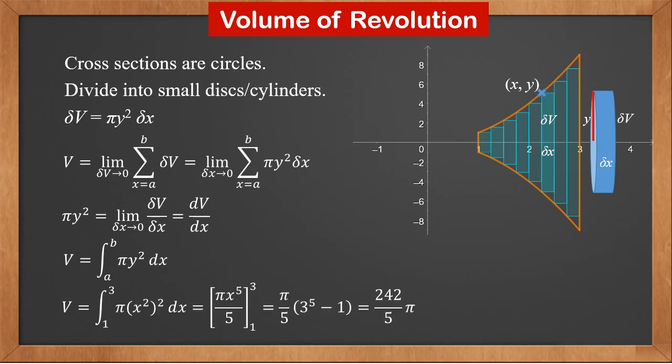In this example, the curve is y equals x squared. So pi y squared is pi times x squared squared, which is pi x to the power 4. The integral is pi x to the 5 over 5. Putting in the two limits 3 and 1, we get the volume as 242 over 5 pi. Remember, there's always a pi in the volume — it's a common mistake to forget about it when you do the integration, so please be careful.